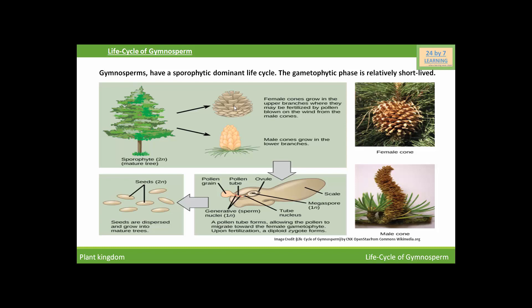Female cones, called megastrobili, may be borne on the same plant that bears the microstrobilus, as in conifers, or on separate plants, as in cycads. A megastrobilus contains many scale-like megasporophylls that contain megasporangia. Megasporangia contain megaspores. Within the megasporangia, a single diploid cell called a megasporocyte is present, which undergoes meiotic division to produce four haploid megaspores, three of which typically degenerate.